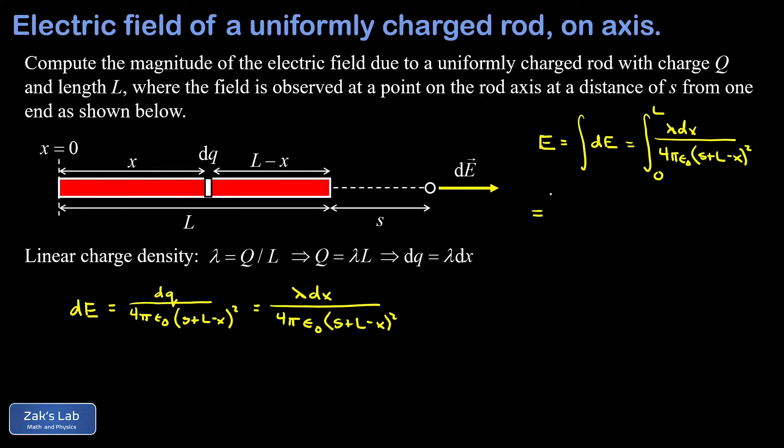Now we can pull all the constants out in front of this integral to make it easier to look at and I have a lambda over 4 pi epsilon zero out in front and then we have the integral from zero to L of dx over s plus L minus x all squared.